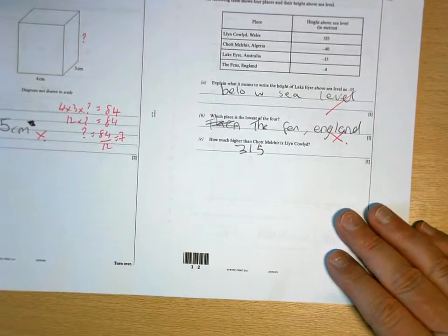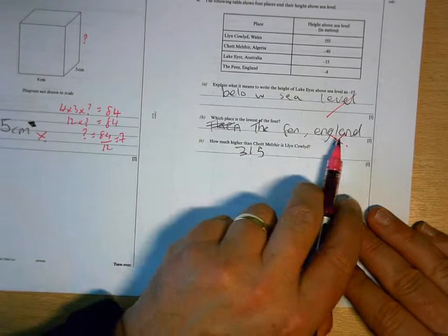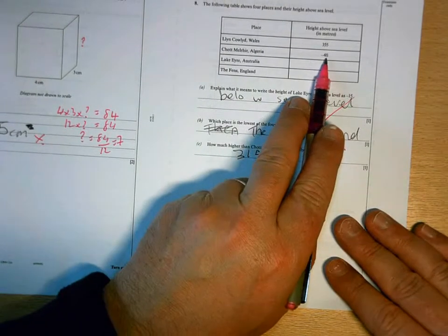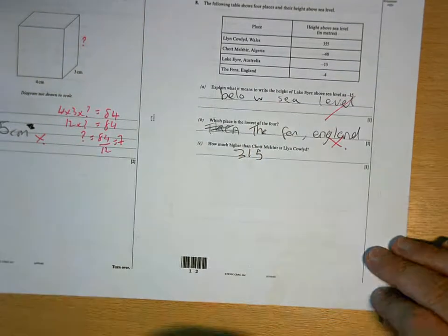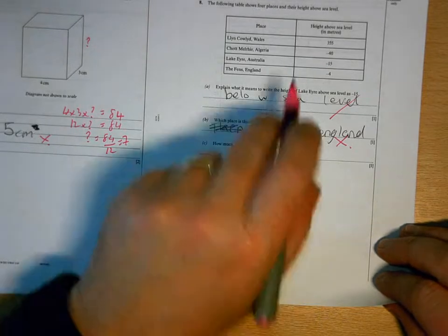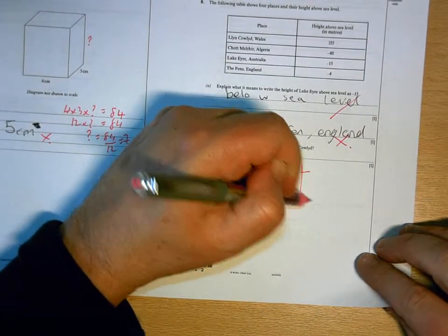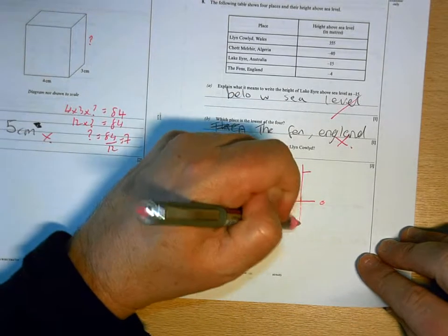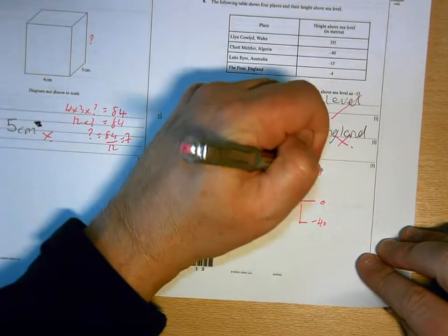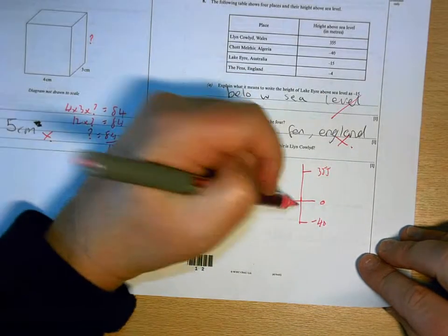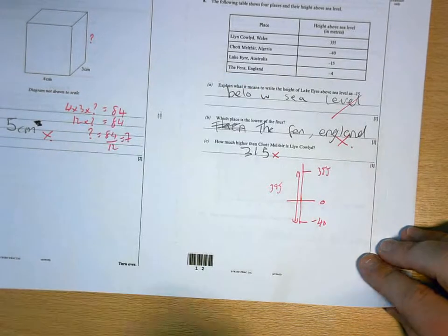Below sea level is what it means, which places the lowest of the 4, the lowest, most negative number there is that one, not that one. And it's not 315, because what you've got there is if that's 0, that's negative 40, that's 355. So, the total from there to there is 395.